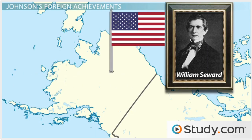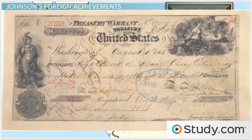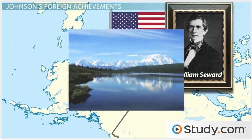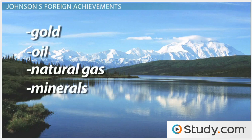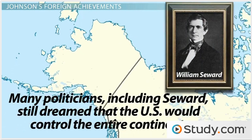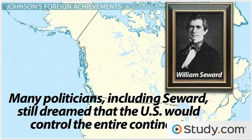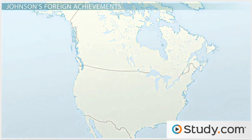But the Senate loved the idea and enthusiastically approved the treaty. In the long run, of course, Alaska has proven to be full of valuable natural resources, including gold, oil and natural gas, and minerals. In the short term, many politicians, including Seward, still dreamed that the U.S. would control the entire continent. Seward also targeted Hawaii and several other islands, but these efforts failed for the time being.